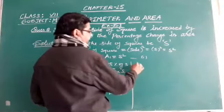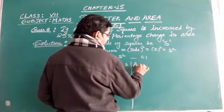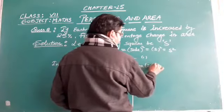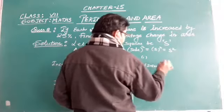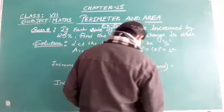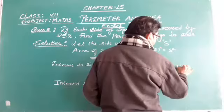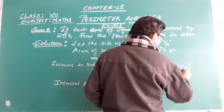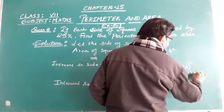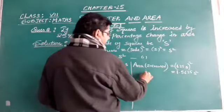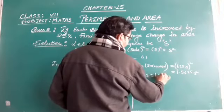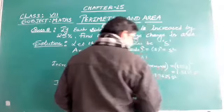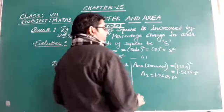Now the increased area, A₂, will be the square of 1.25S. So we get (1.25S)² = 1.5625S².